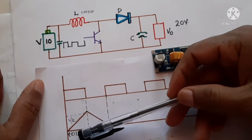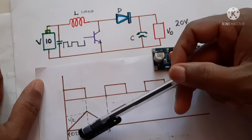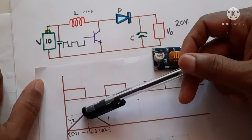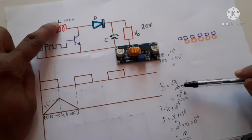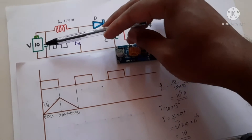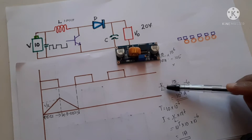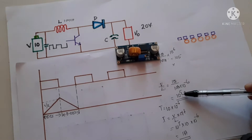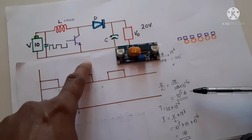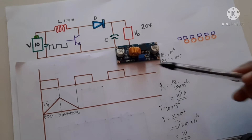If we turn on this transistor for only 10 microseconds, the on-time period is 10 microseconds and the current will reach a particular value in that time. We can calculate that value: the inductor value is 100 micro-henry and the input voltage is 10 volts. So we put input voltage as 10 volts and inductor value as 100 micro-henry. We get di/dt equal to 10 raised to 5 amperes per second. That means in one second the current would reach 1 lakh amperes, but we are turning on this switch for only 10 microseconds.